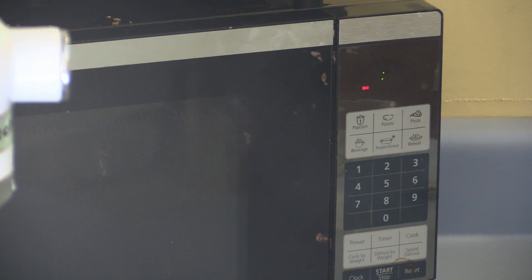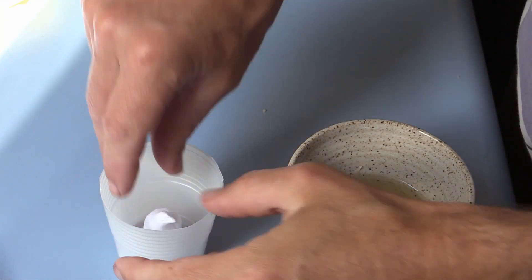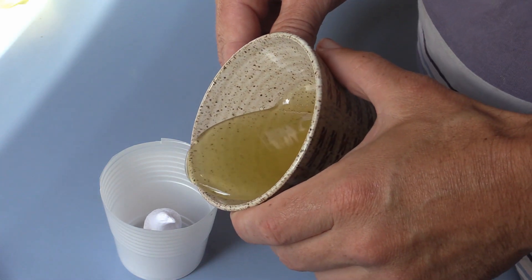Melt the ComposiMold in the microwave for about 40 seconds for a small amount like this. Make your rubber mold by pouring your ComposiMold around your object.